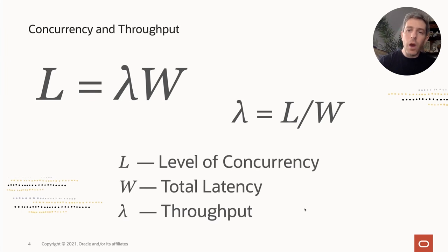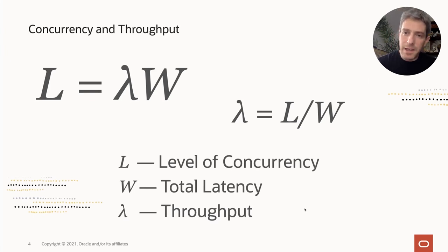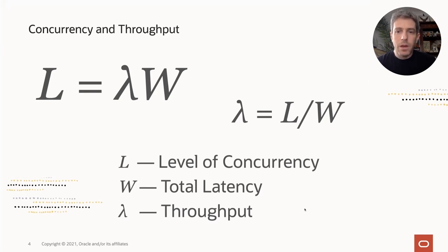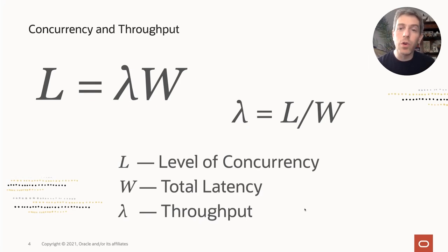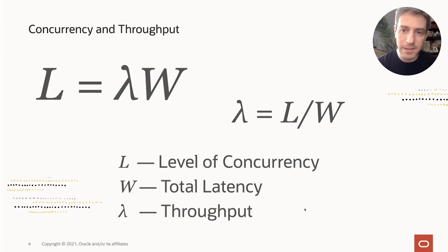There's a nuance here worth paying attention to. Suppose that to serve requests, our server needs to contact two services over the network, each responding within five milliseconds. If those services are independent, instead of calling them one at a time taking 10 milliseconds in total, we call them in parallel. We've reduced the latency by a factor of two, but we've also multiplied our level of concurrency by two, and the two cancel each other out. So W is the overall latency of serving a request as if it were done sequentially — in this case, still considered 10 milliseconds rather than five.